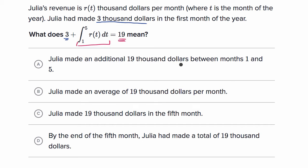Julia made an additional $19,000 between months one and five. Choice A would be correct if you didn't see this three over here, because just the definite integral is the additional between months one and five. But that's not what this expression says. It says three plus this is equal to 19. If it said Julia made an additional $16,000, well then that would make sense because you could subtract three from both sides and you'd get that result, but that's not what they're saying.